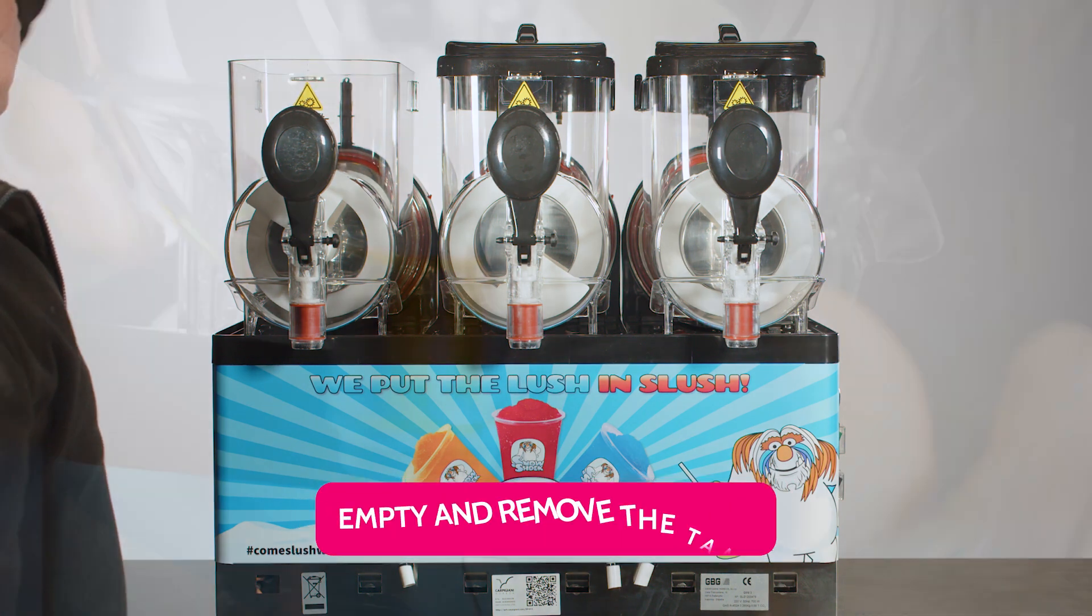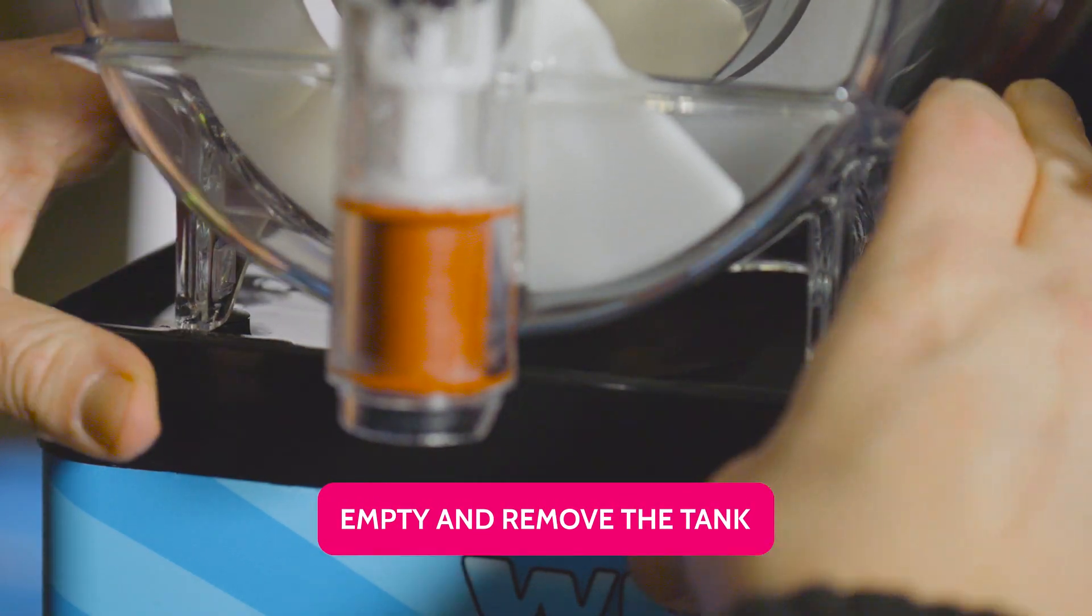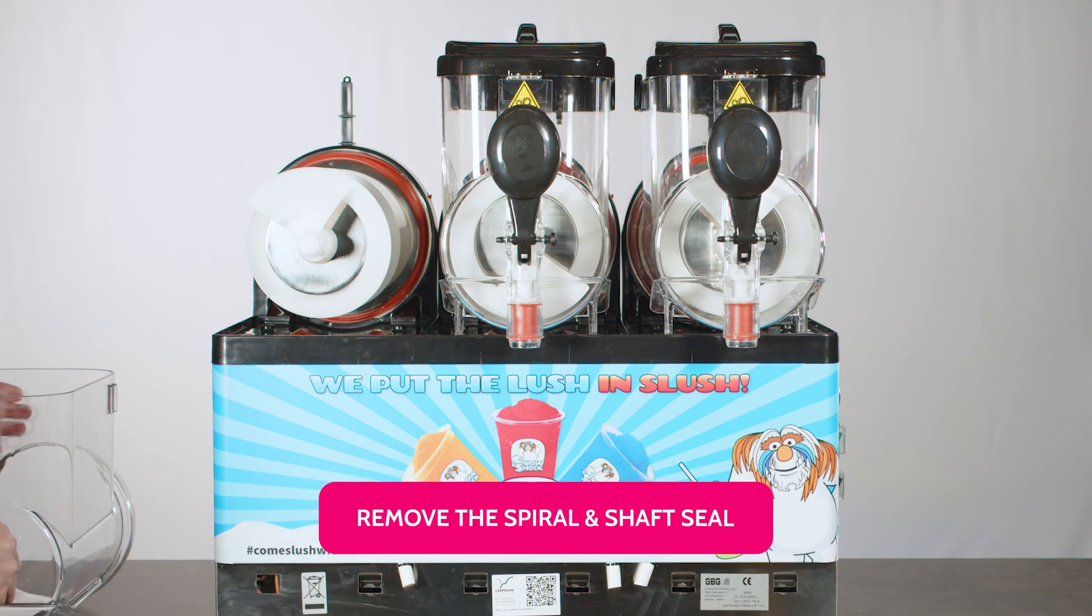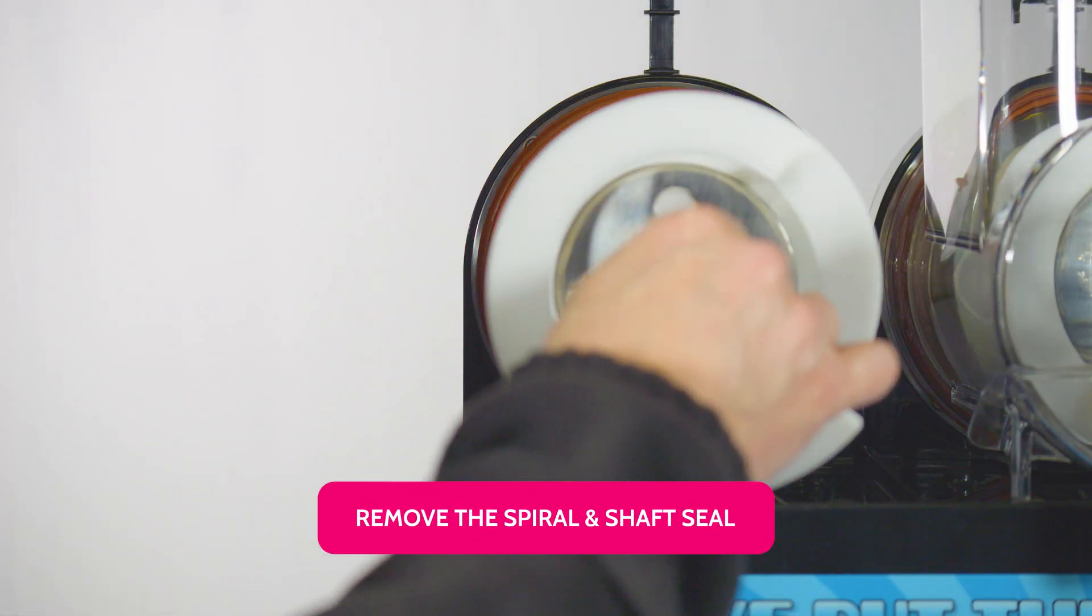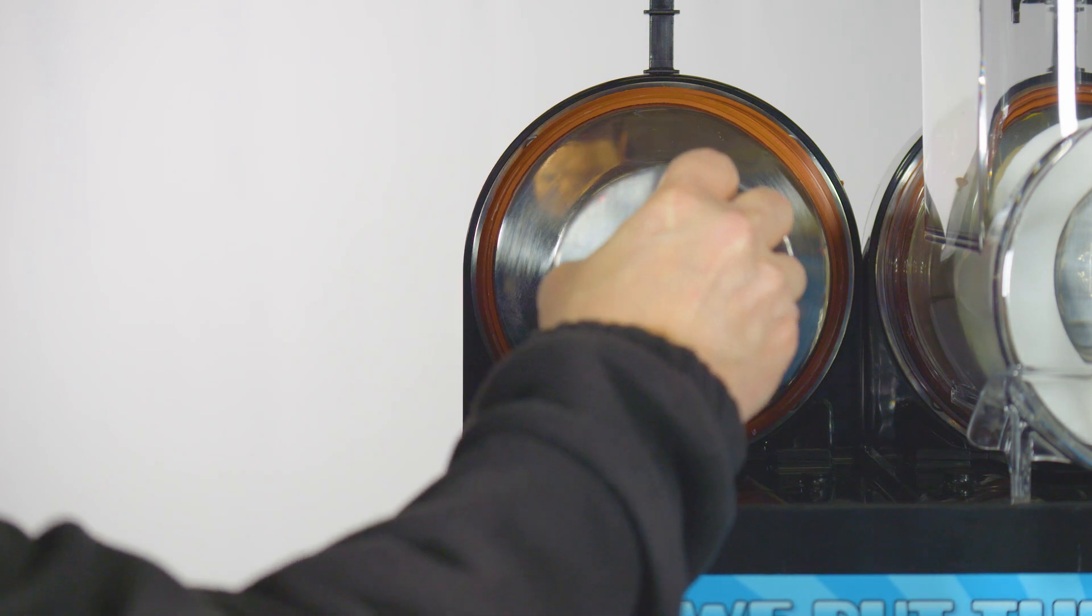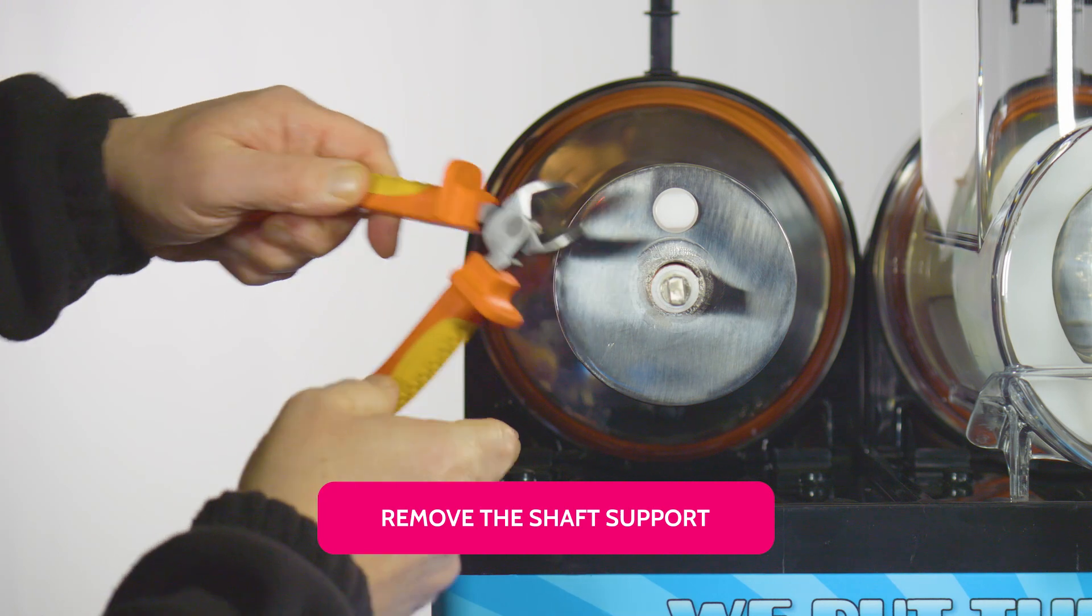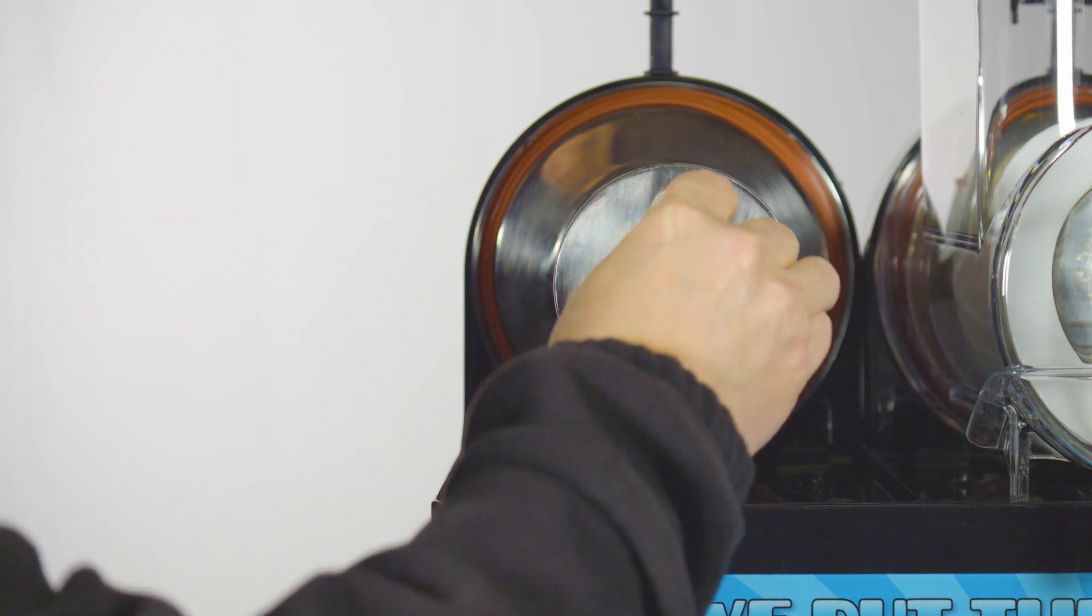First, empty and remove the tank. Then remove the spiral and watertight shaft seal. Using pliers, remove the hard white shaft support with O-rings by pulling it towards you.